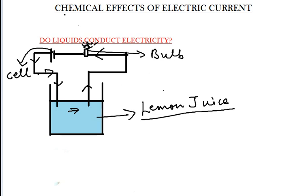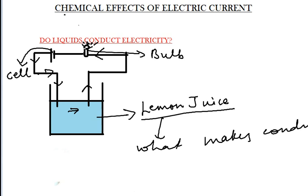But the question is: what makes the lemon juice conducting? The answer is the salts present in the lemon juice. The salts act as a carrier — they carry the electric current through the lemon juice, which then passes through the bulb and makes it glow. So through this example we can see that liquid can also conduct electricity.